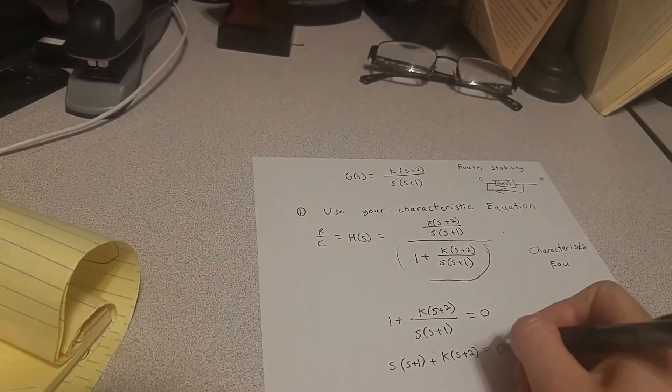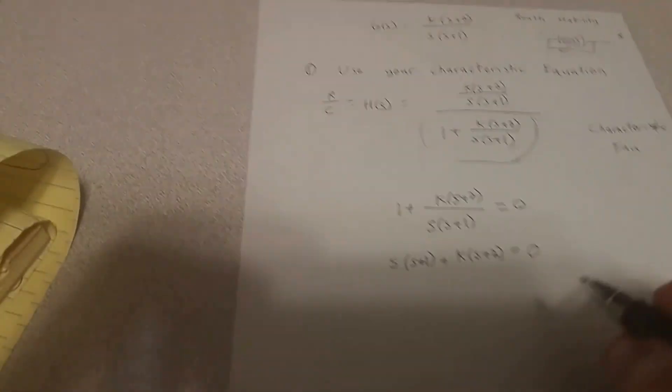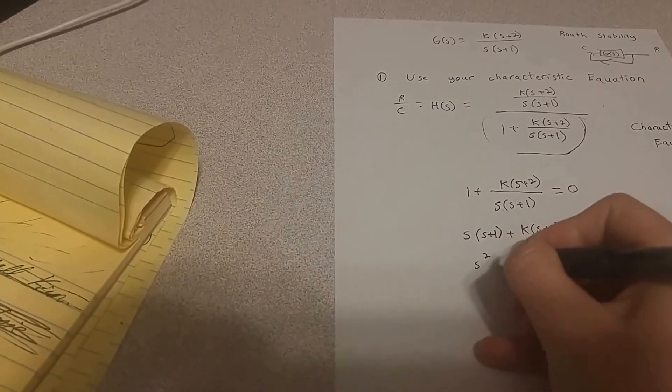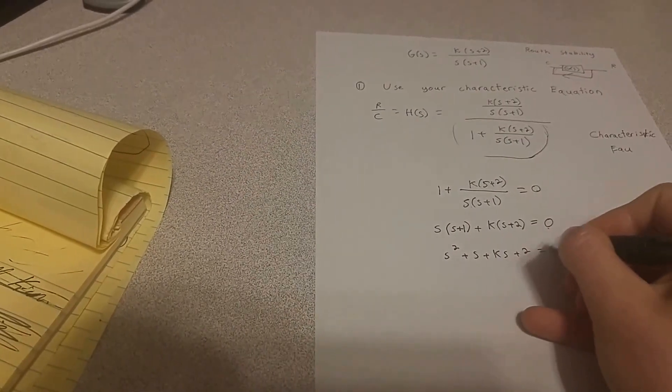It's kind of convenient. Anyway, 0 times anything is still going to be 0. And then I'm going to use the distributive property here. S squared plus s plus k times s plus 2 equals 0.